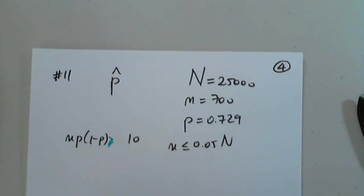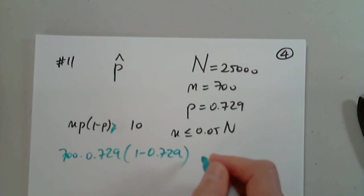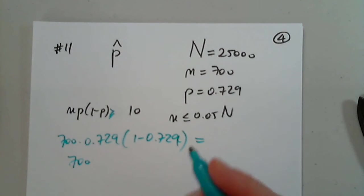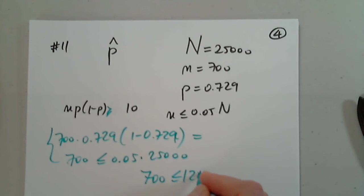So NP: 700 times 0.729 times (1 minus 0.729), and we have to determine that. And n, 700, is that less than or equal to 0.05 of 25,000? So 0.05 multiplied by 25,000. We know that the sample size 700 is definitely less than or equal to 0.05 times N, so the second condition is fulfilled. Now this next one, 700 multiplied by 0.729 times (1 minus 0.729), this has to be greater than or equal to 10. If it's not, then we cannot conduct the test.